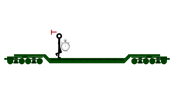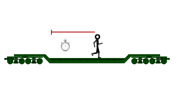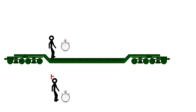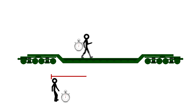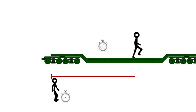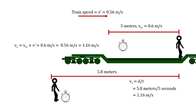With this in mind, to be completely accurate, the statement needs to be worded as: the person on the train is moving at 0.6 meters per second with respect to the train, and the person on the train is moving at 1.16 meters per second with respect to the ground. You can see that we are simply adding the speed of the train to the speed of the person with respect to the train.